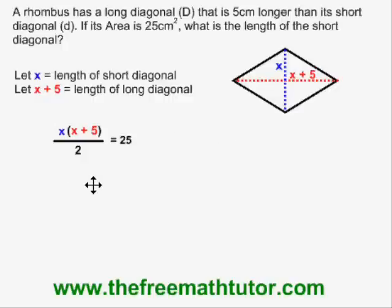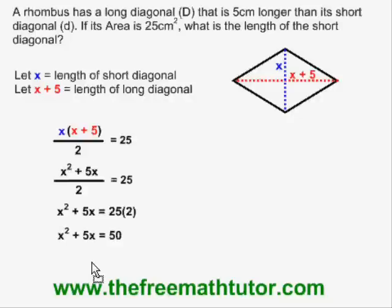Simplifying, I get x squared plus five x over two equals twenty-five, and then if I multiply both sides of the equation by two, x squared plus five x equals fifty, and finally x squared plus five x minus fifty equals zero.